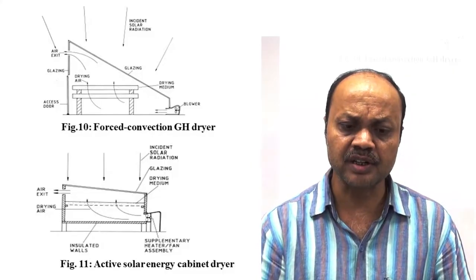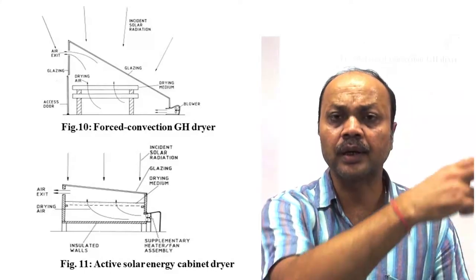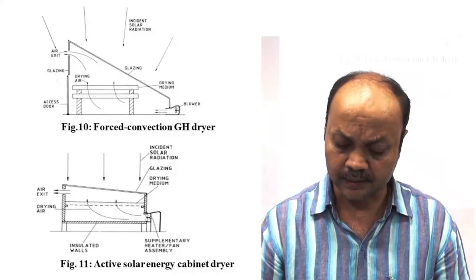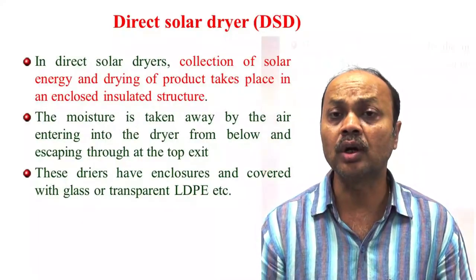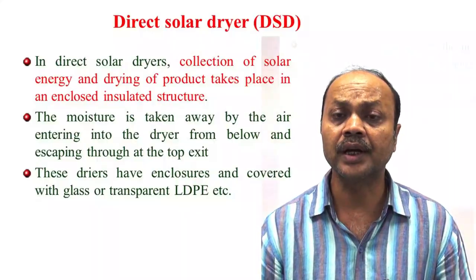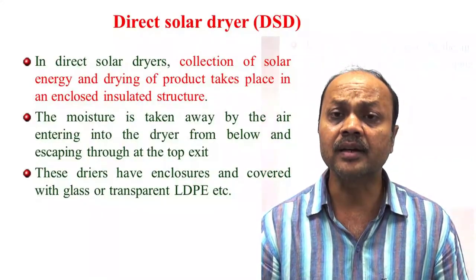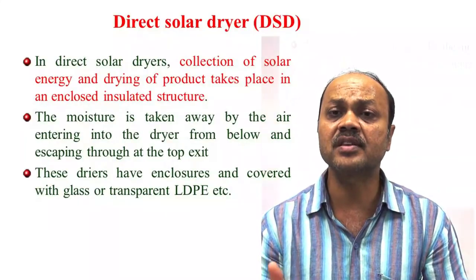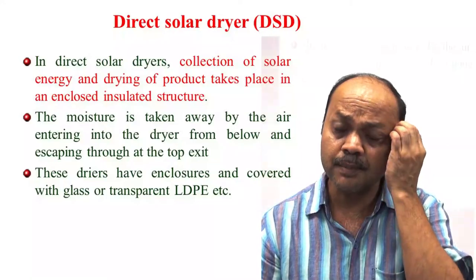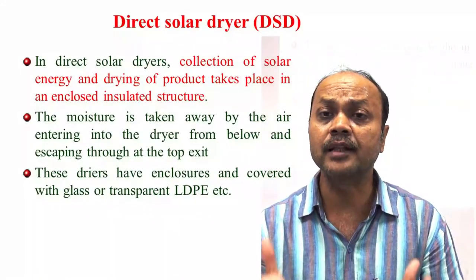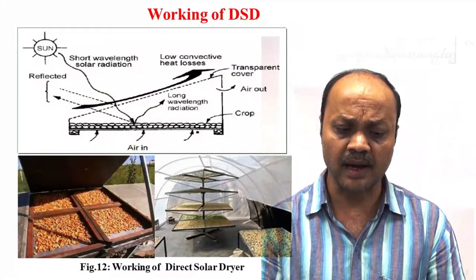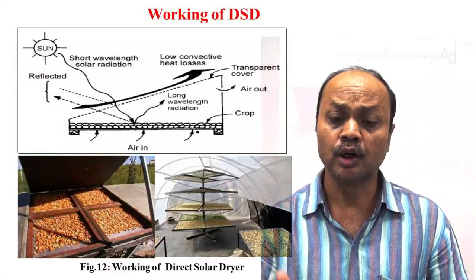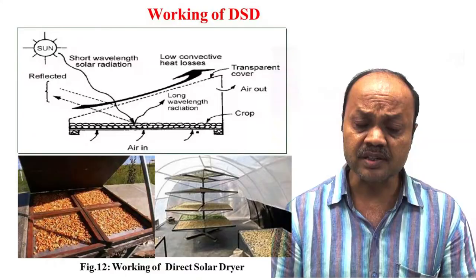This is the forced convection greenhouse dryer. Outside air is coming inside, and we are exhausting the humid air from inside the chamber to outside using an exhaust fan. In passive and active systems, it can be of three types: direct, indirect, or mixed. In direct solar dryer, in the same chamber you are collecting the energy and drying the food product. This is the basic concept — same as a conventional greenhouse used for cultivation, but here you use the same chamber for collecting energy and drying the food product. It is simpler and cheaper to construct because there is only one chamber, and product quality is better than open sun drying.